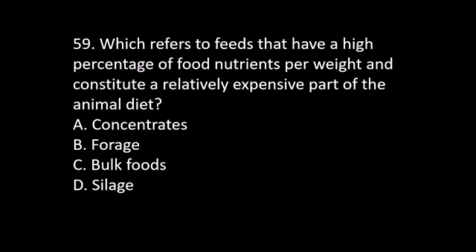Number 59. Which refers to feeds that have a high percentage of food nutrients per weight and constitute a relatively expensive part of the animal diet? A. Concentrates. B. Forage. C. Bulk foods. D. Silage. The answer is A. Concentrates.